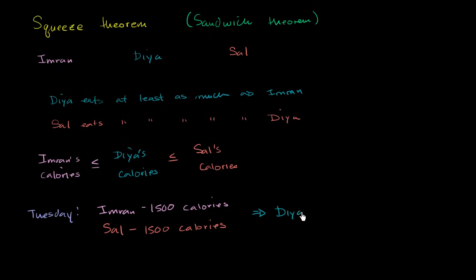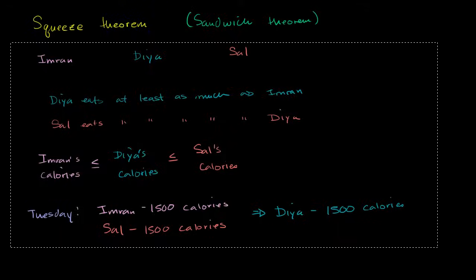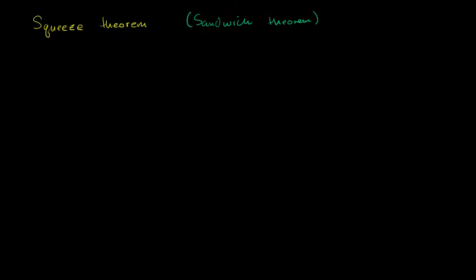This is common sense — Dia must have had 1,500 calories. The squeeze theorem is essentially the mathematical version of this for functions. You can view Imran's calories as a function of the day, Sal's calories as a function of the day, and Dia's calories as always being in between those two. So now let's make this more mathematical. Let's say we have three functions where f of x is always less than or equal to g of x, which is always less than or equal to h of x over some interval.